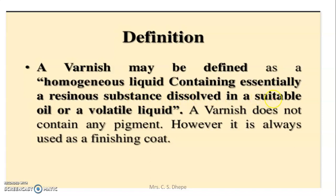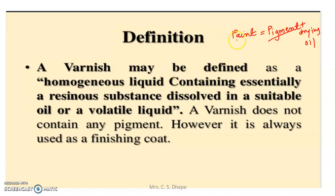The resinous substance is dissolved in either oil or in a volatile liquid. Varnish and paint differ: paint is pigment plus oil or vehicle or dry oil. But here in varnish, pigment is absent. In paint, pigment is present, whereas in varnish, pigment is absent but resinous substance is present — dissolved in oil or in volatile liquid, also called the thinner, or sometimes in both.